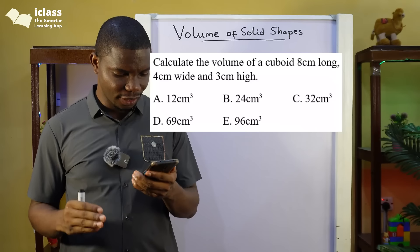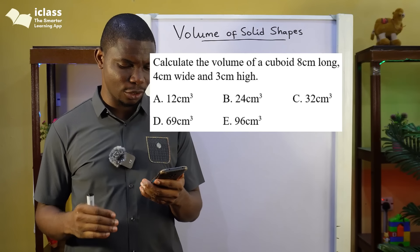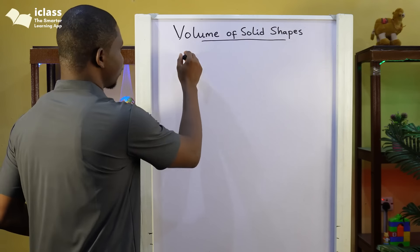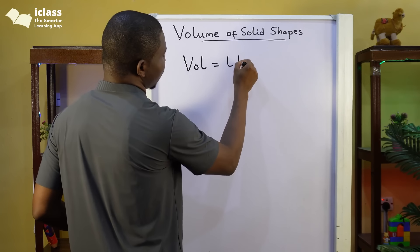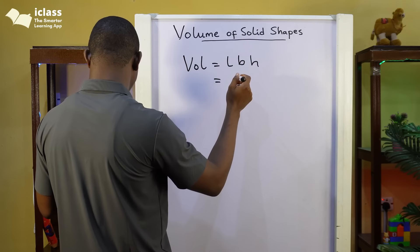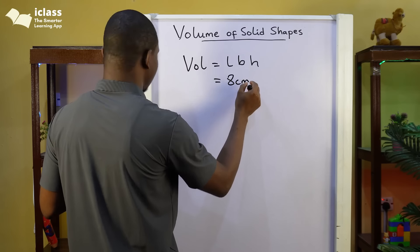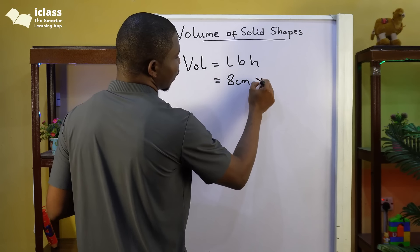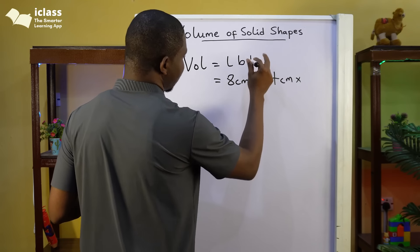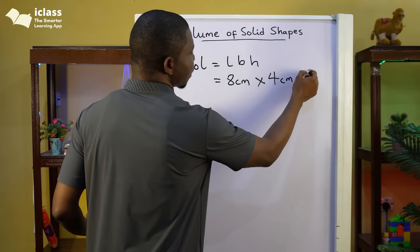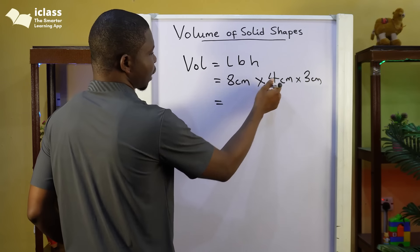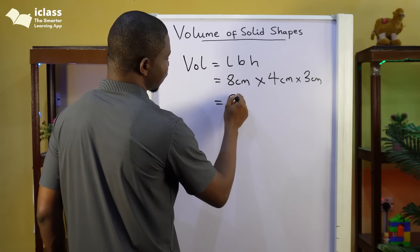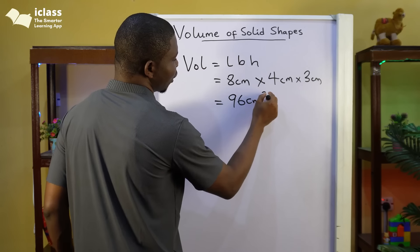Question number 2: calculate the volume of a cuboid that is 8 centimetres long, 4 centimetres wide, and 3 centimetres high. Remember, the volume of a cuboid is length times breadth times height. The length is 8 centimetres, the breadth is 4 centimetres — breadth or width is the same thing — and the height is 3 centimetres. So 8 times 4 is 32, and 32 times 3 is 96. We have 96 centimetres cubed.